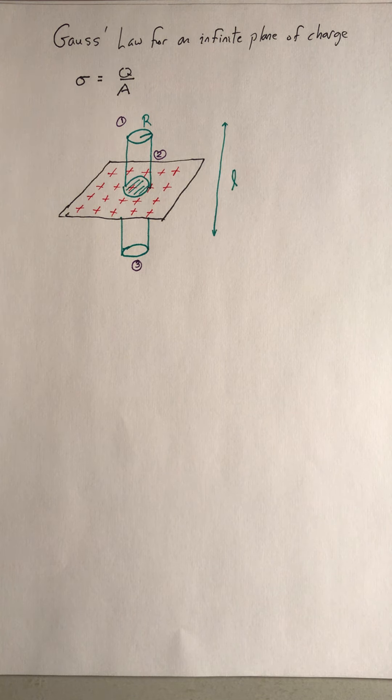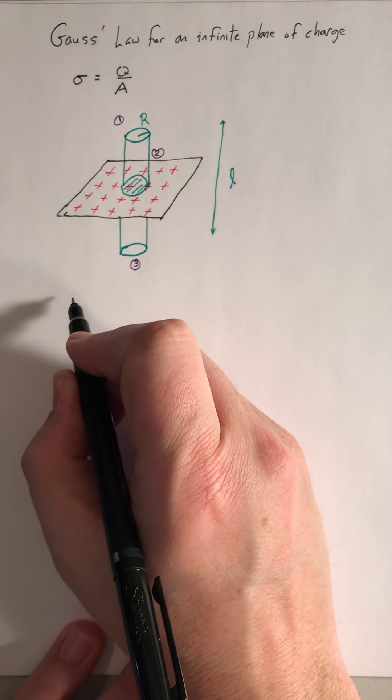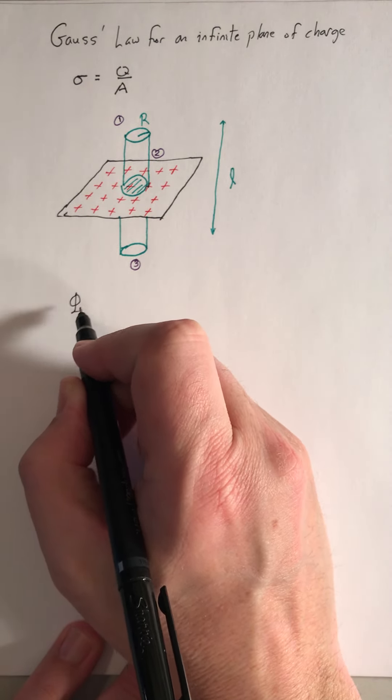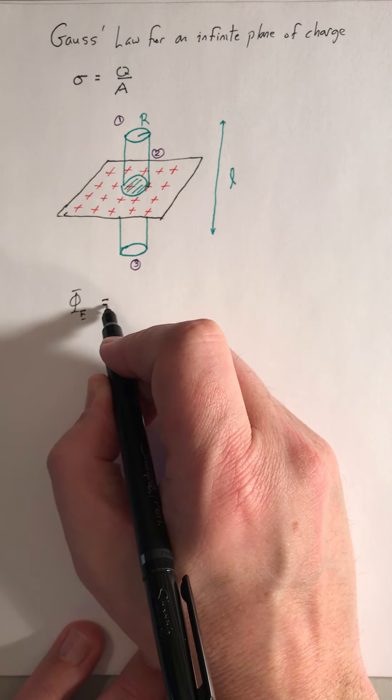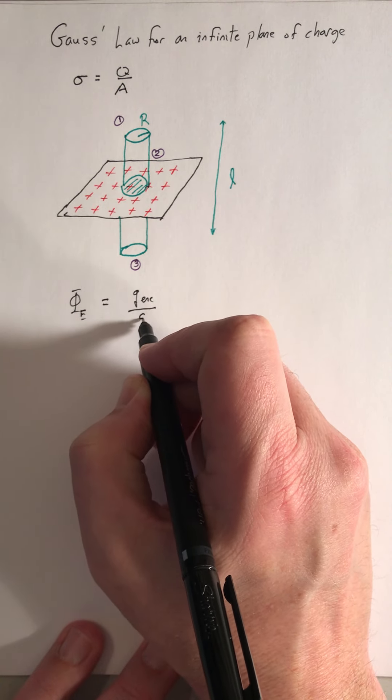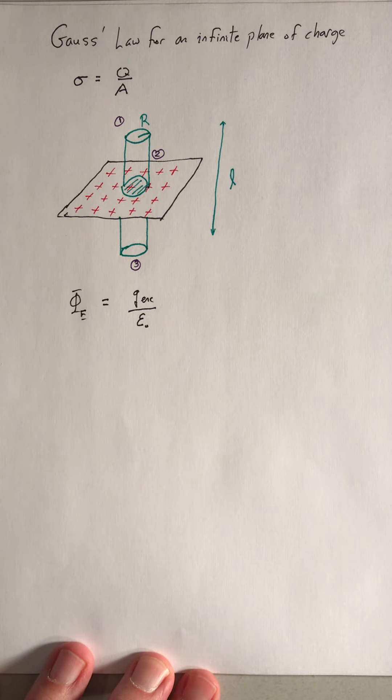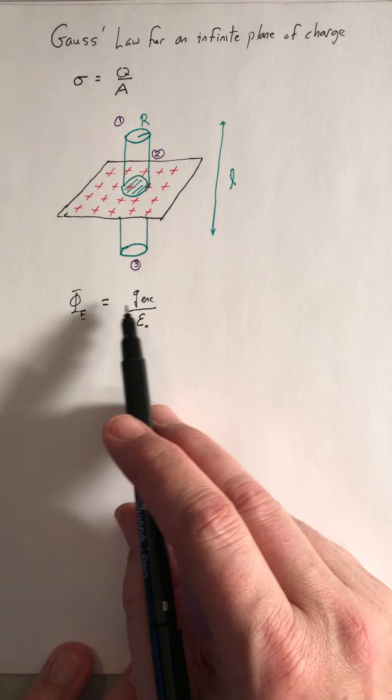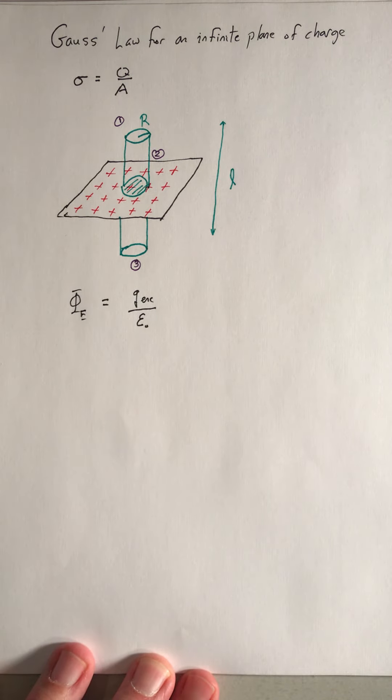Now applying Gauss's law. We have the flux of the electric field through my Gaussian surface is going to equal all of the enclosed charge over the permittivity of free space. We're going to go ahead and calculate both the flux of the electric field and how much charge is enclosed in that surface.